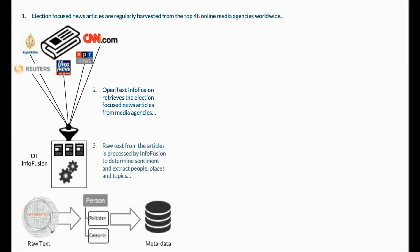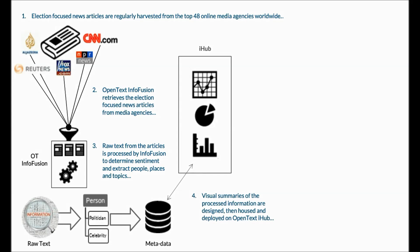Next, raw text from those articles is processed by InfoFusion to determine the sentiment and extract the people, places, and topics — forming the metadata that's necessary to depict in analytic visualization. Then the team got to work building out those visual summaries, all of the interactive charts and visualizations, which were housed on the iHub and ready for deployment.